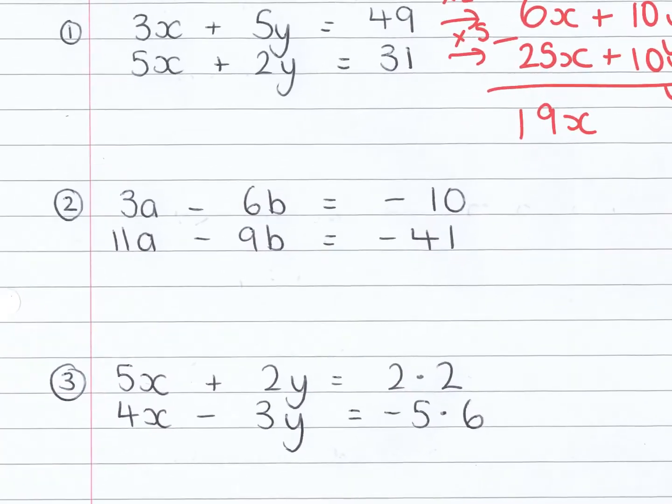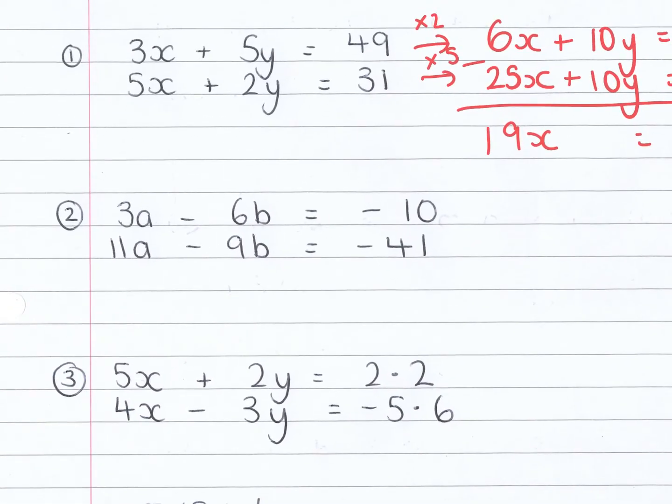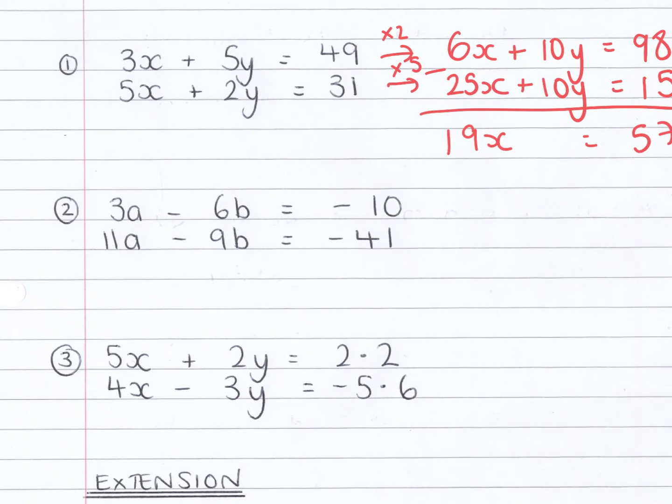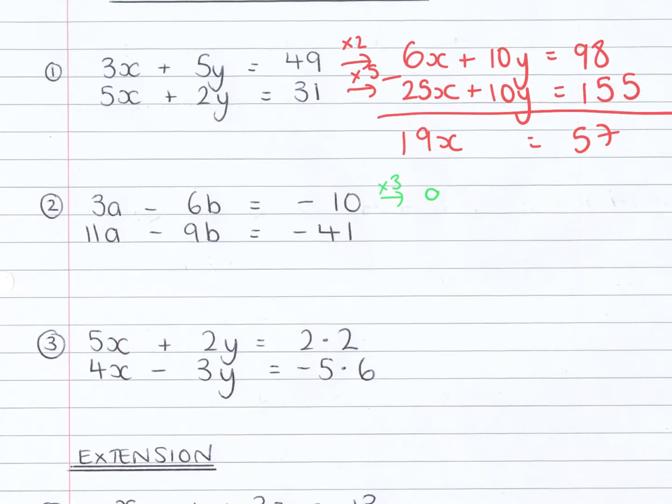Right, second one. For this one I'm going to make both of the b's 18. I'm going to times that one by 3, that's 9a minus 18b equals minus 30. And then I'm going to times the bottom one by 2: 22a minus 18b equals minus 82.